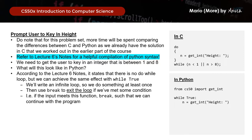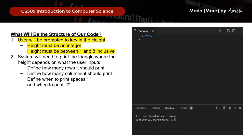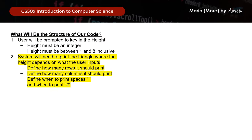Our condition in Python will exit the loop if the height keyed in is between 1 and 8 inclusive — that is, if n is greater than 0 and n is less than 9, then we will break. Let's write our program: we start by importing get_int from the CS50 library. Then while true, n equals get_int height. If n is greater than 0 and n is less than 9, we break and continue with the rest of the program.